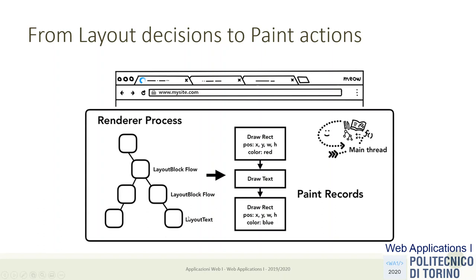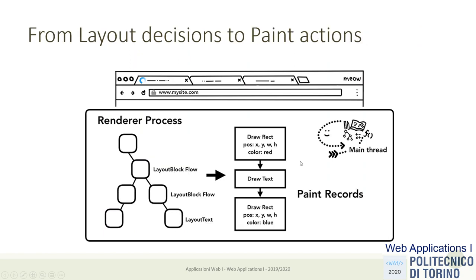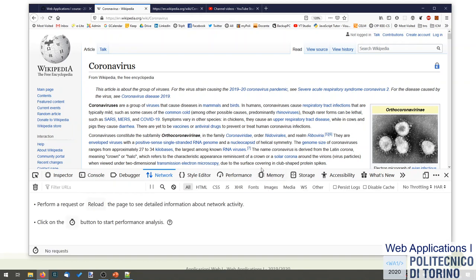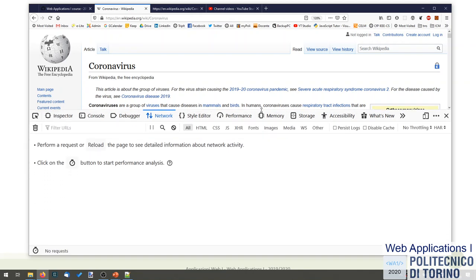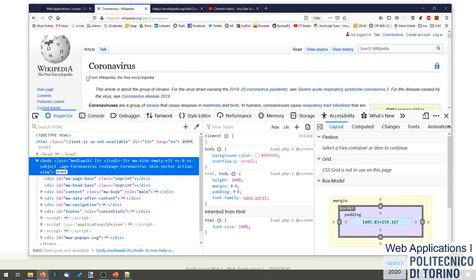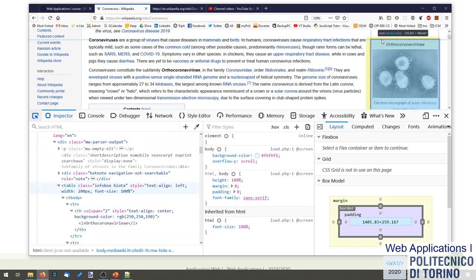It's a very complex process that is recomputed every time we change the DOM — the computed style changes and the layout effect also changes. We can see some of this process in the inspector. If you go to the inspector and select any element — for example this image here — you can see some layout decisions on the bottom right that decided the size, margin, and so on.